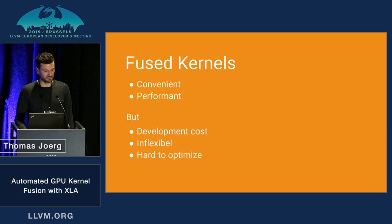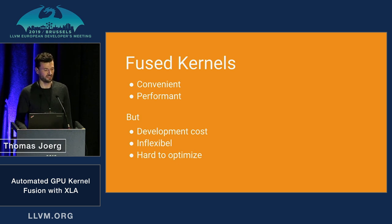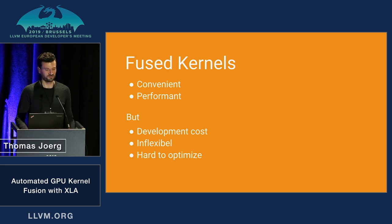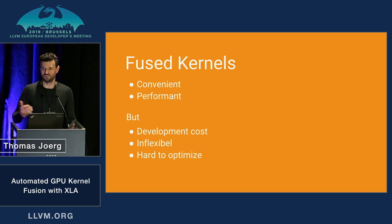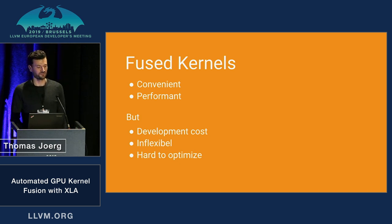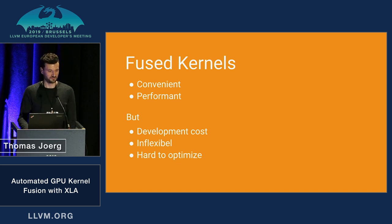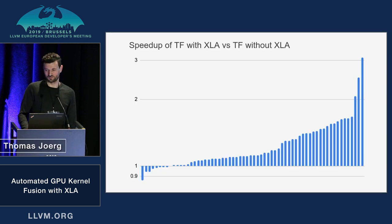Very importantly, these things are black boxes, so any attempts to optimize them automatically are very hard. What XLA seeks to do is keep all the benefits but remove all the drawbacks, and the idea is to automate the kernel fusion process completely.